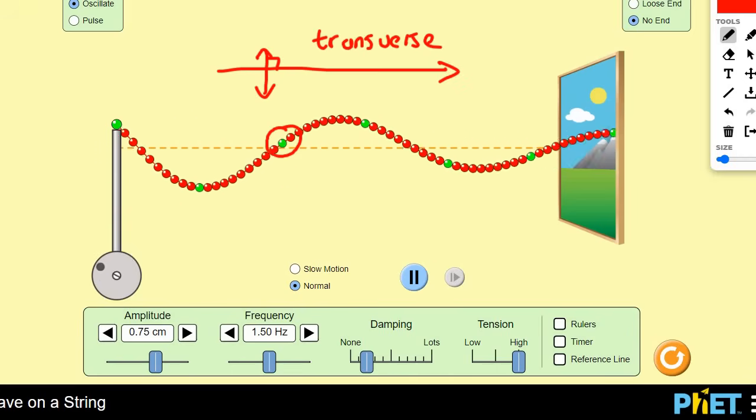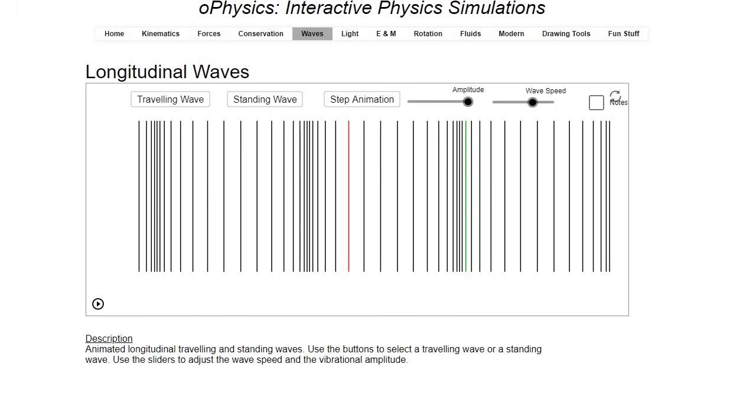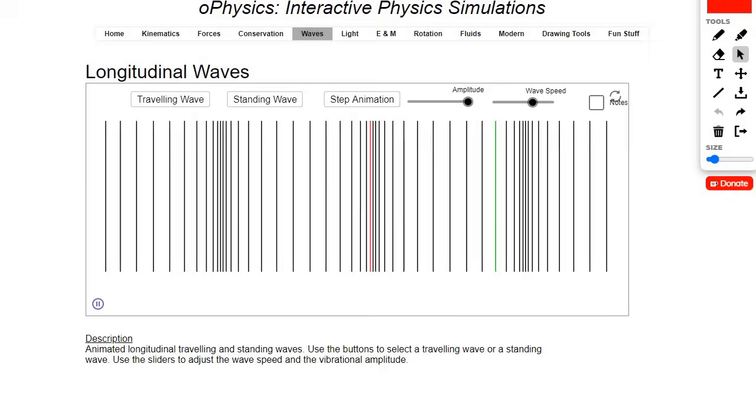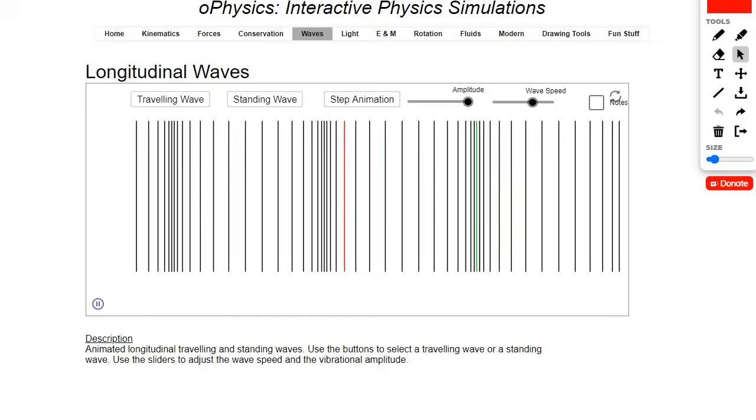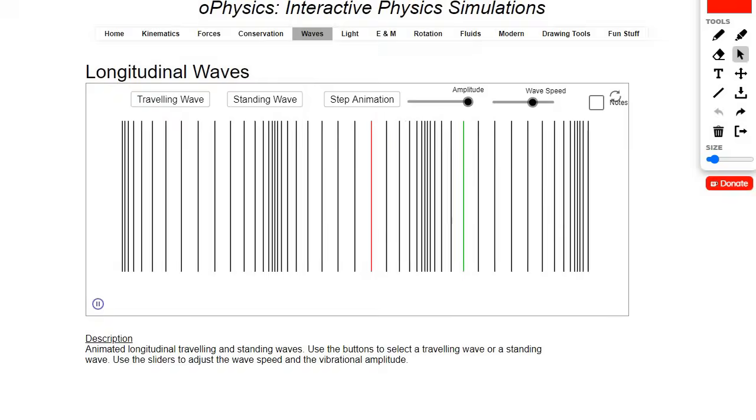But now in this lesson, we're going to be looking at longitudinal, which is a totally different type of wave. So here we're going to look at a longitudinal wave. Now I'm going to let this wave go, and I want you to try to see in which direction the wave is going.